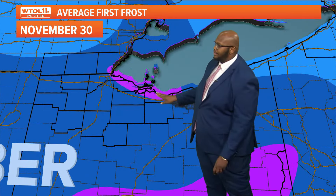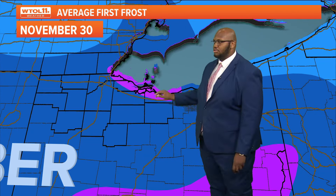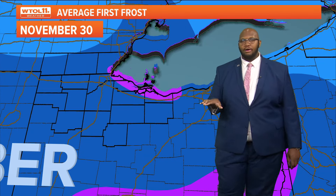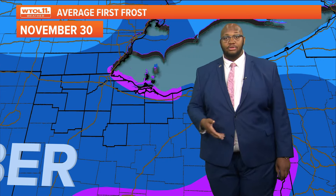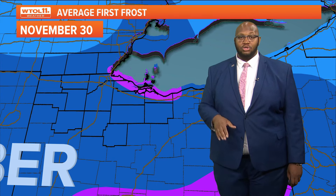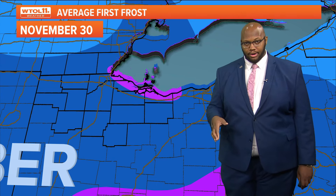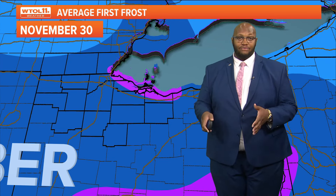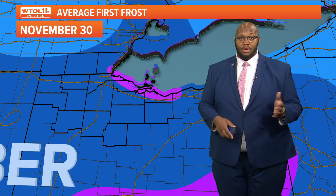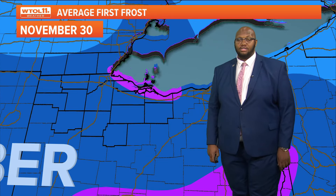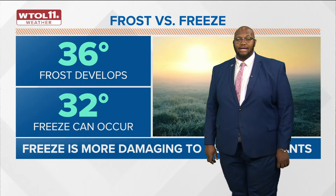Along lakeshore areas, we typically see warmer conditions because the lake is still very warm and takes longer to cool down. Those lakeshore temperatures stay a little bit warmer, so it takes longer for temperatures to cool down enough for frost. Around lakeshore areas, you'll see the average first frost typically around late October.